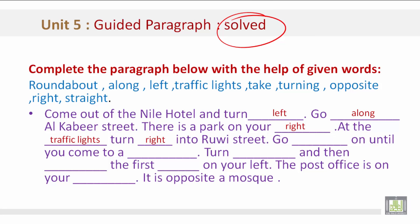At the traffic lights, turn right into Rui Street. Go straight on until you come to a roundabout. Turn right, and then take the first turning on your left. The post office is on your right. It is opposite a mosque.